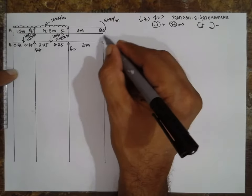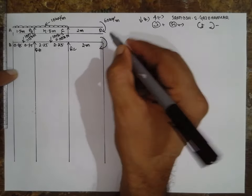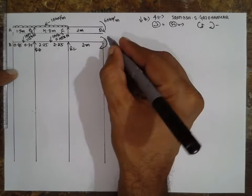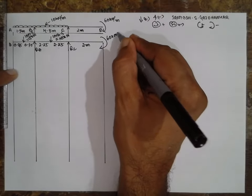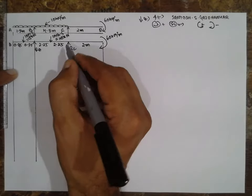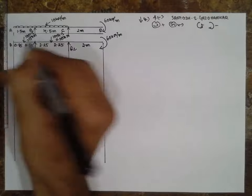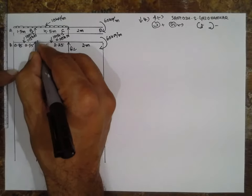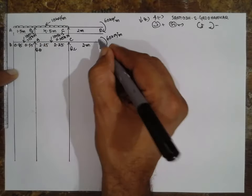There is a couple acting here of 60 kilonewton meter. Points are labeled: this is A, this is B, this is C, and this is D — with 15 kN noted.